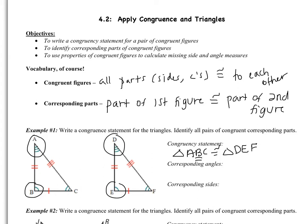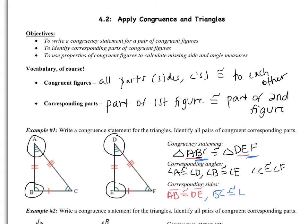Corresponding angles just means which angles are congruent. I have angle A is congruent to angle D. I have angle B is congruent to angle E. And then angle C is congruent to angle F. I can tell that by the figure or by looking at the congruency statement. For corresponding sides, I know AB is congruent to DE, BC is congruent to EF, and AC is congruent to DF. All you're doing is taking information from the figure.